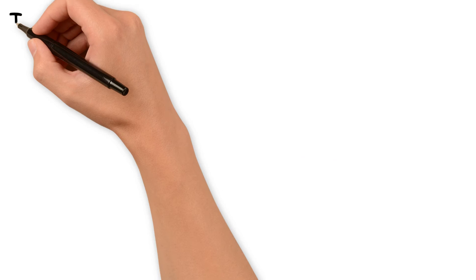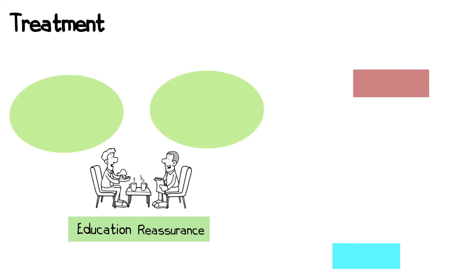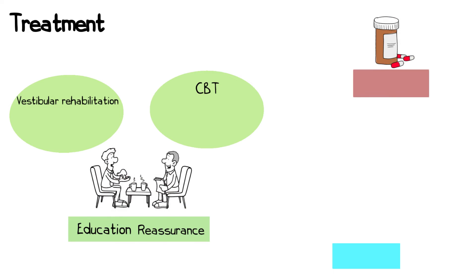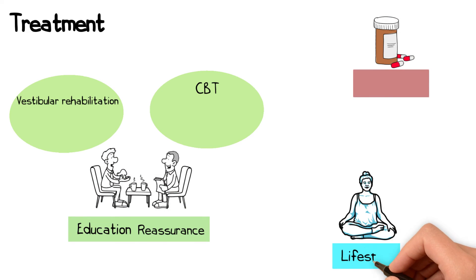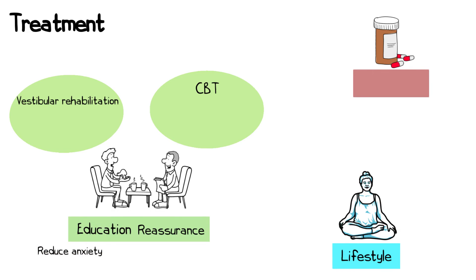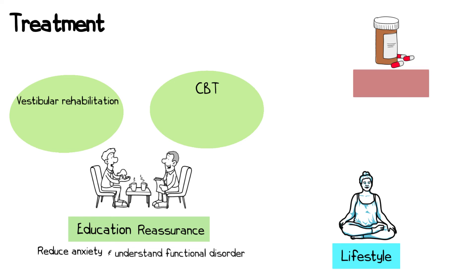The treatment of 3PD involves a multidisciplinary approach, including education and reassurance, vestibular rehabilitation therapy, cognitive behavioural therapy, medications, and lifestyle modifications. Educating patients about their diagnosis and the nature of 3PD can help reduce anxiety and improve their understanding of the condition. This can reassure patients that 3PD is a functional disorder and not a sign of a more serious neurological disease, and that with treatment the condition can expect to improve.